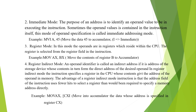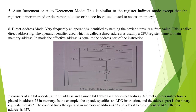The fifth mode is Auto Increment or Auto Decrement Mode. This is similar to Register Indirect Mode except that the register is incremented or decremented after or before its value is used to access memory.